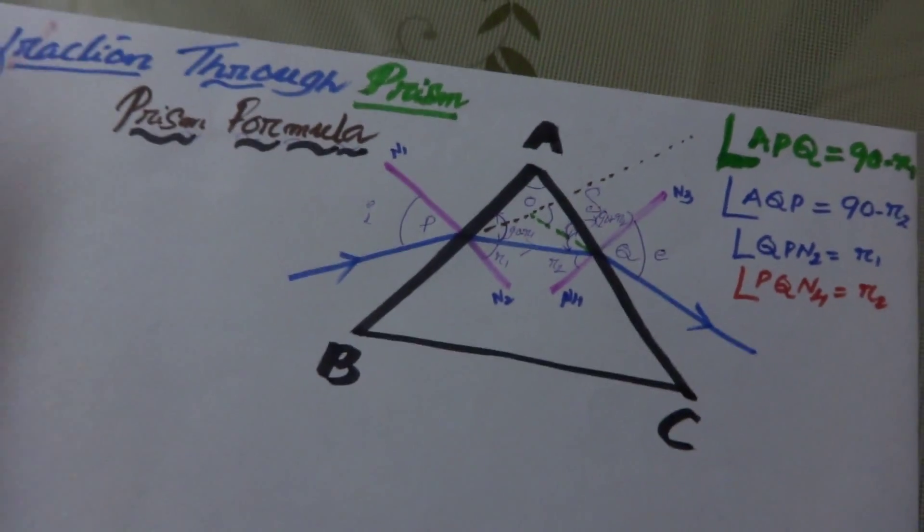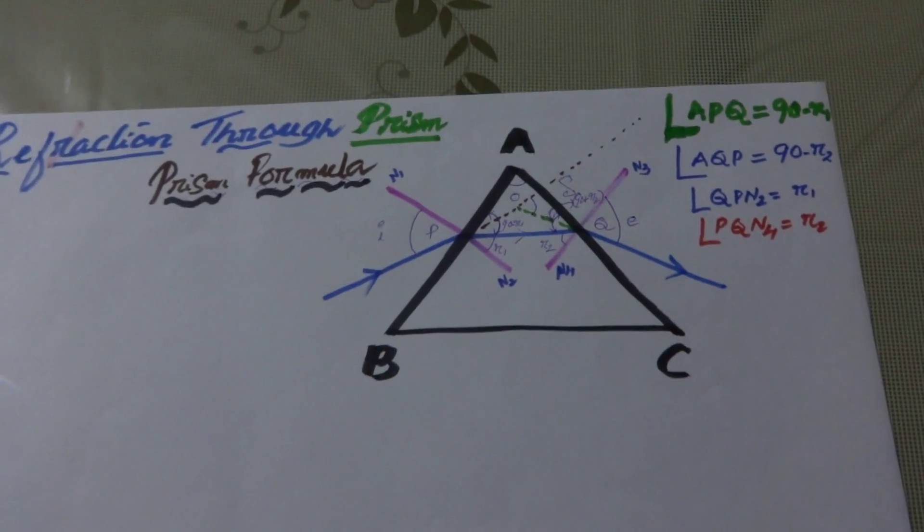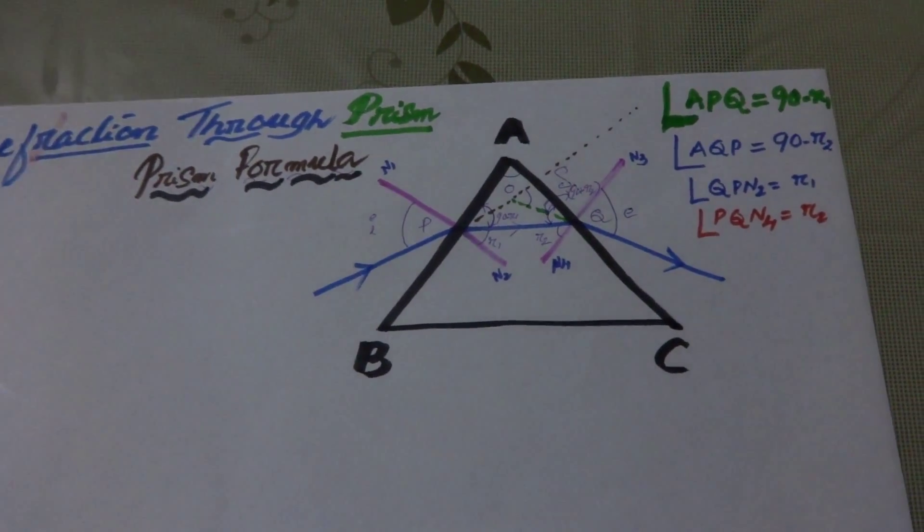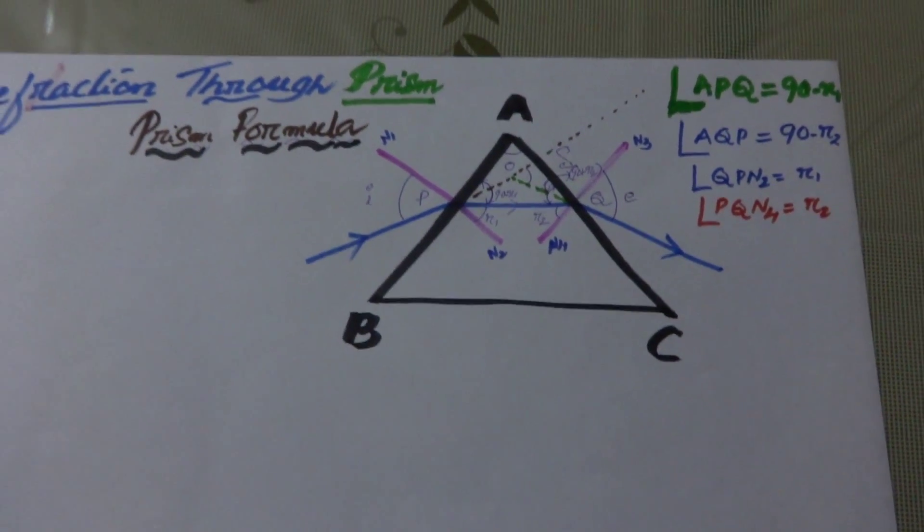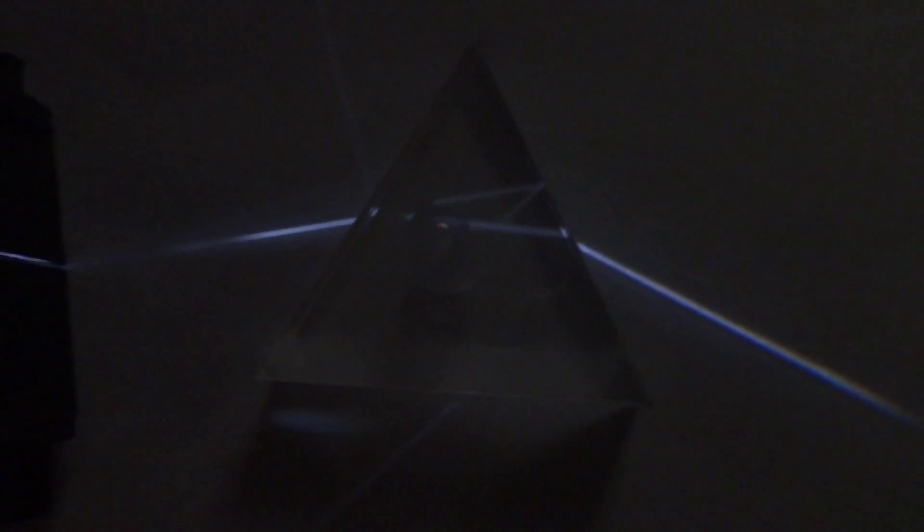Before going into the derivation, let me show you the original refraction. I have taken a ray box and a prism. You can see the incident ray, and inside the prism you can also see the bending of light, and then this is the final emergent ray. From this activity it is confirmed that bending of light takes place. We have visualized the refraction within the prism with the help of a ray box and an acrylic prism.